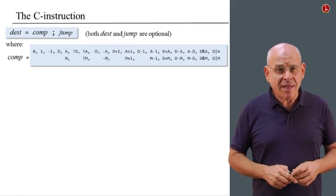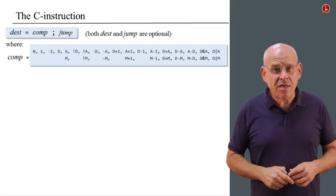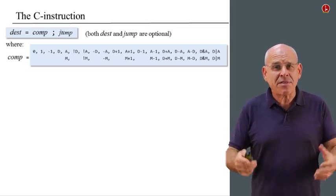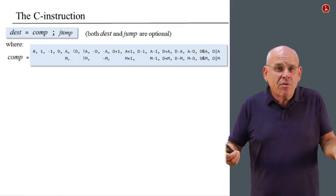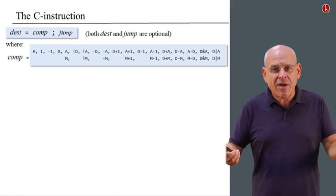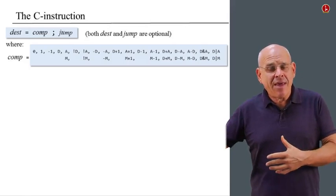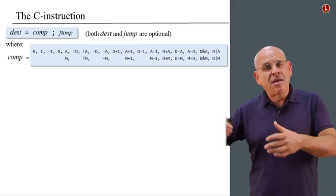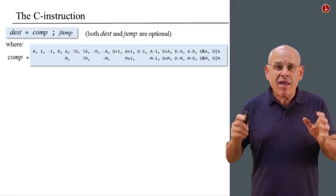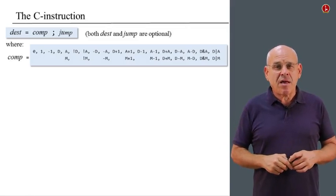Now, let's get more into the details of every one of these fields. The computation can be any one of the computations that we see here. So we see here a set of what is sometimes called mnemonics, or symbols that represent some operation. So we can compute the values 0, 1, minus 1. We can compute the current value of the D register. We can compute D minus 1, D plus A, D and A, and 'and' here is a 16-bit AND, D 16-bit or A, and so on and so forth. And wherever you see the mnemonic A, we can replace it also with a mnemonic M.